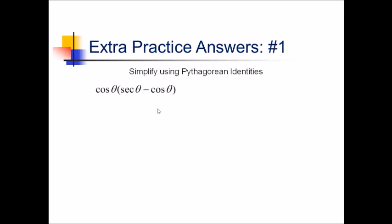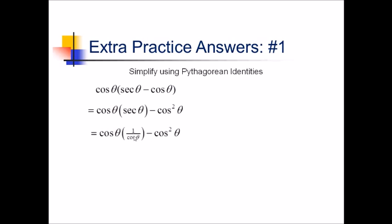For this problem, there isn't really much we can do other than distributing this cosine out in the very beginning. So that gives us cosine secant minus cosine squared of theta. Now, secant we know is really 1 over cosine, so we can immediately cancel out these two cosines, leaving us with just 1 minus cosine squared.